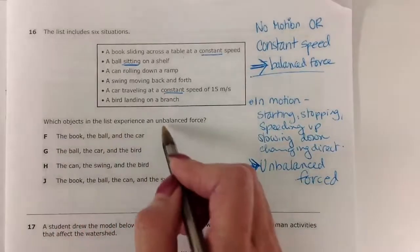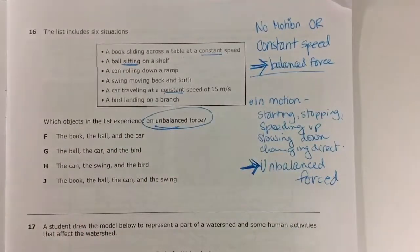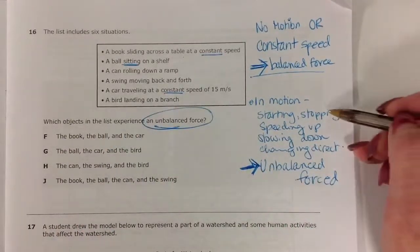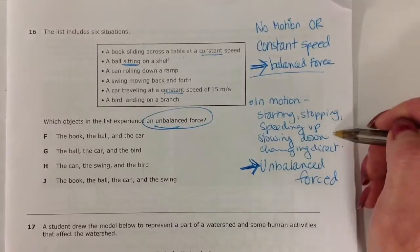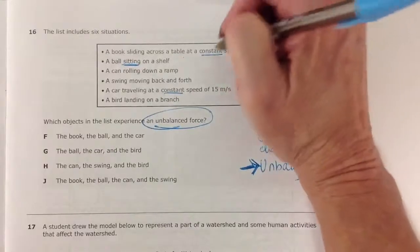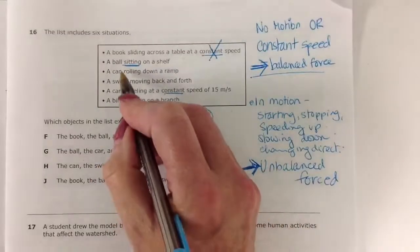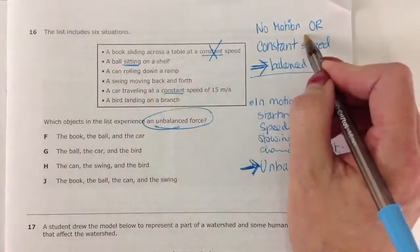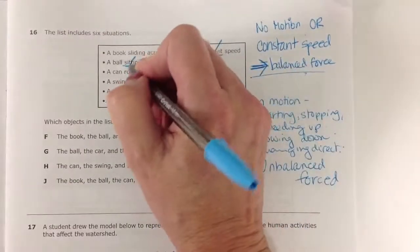Which objects in the list experience an unbalanced force? So we're looking for anything that is starting, stopping, speeding up, slowing down, changing direction. So constant speed is out. That's a balanced force. The ball sitting on a shelf is not in motion. The forces are balanced.